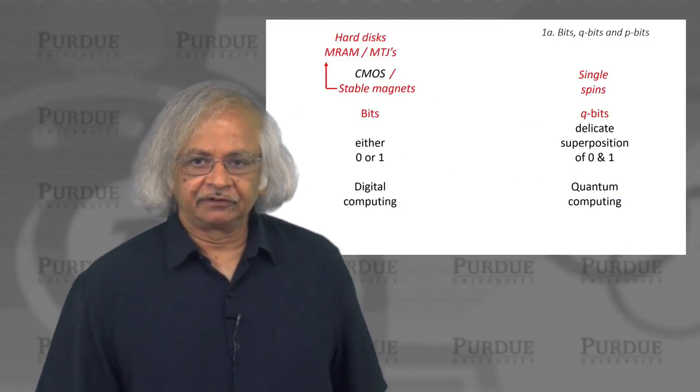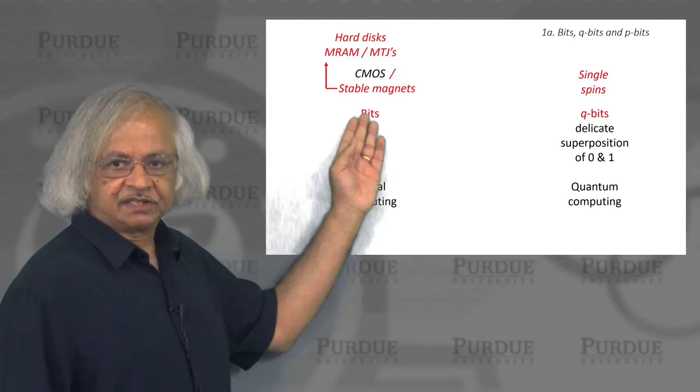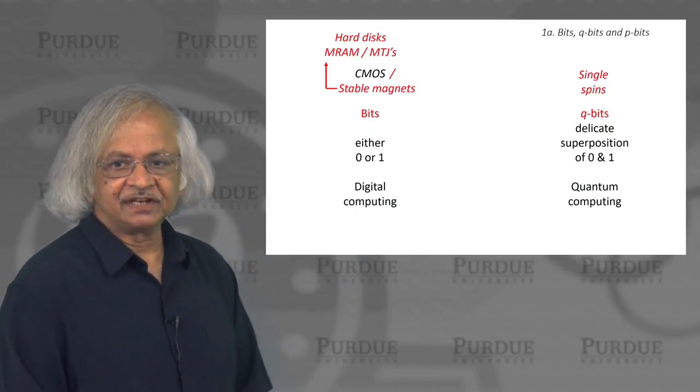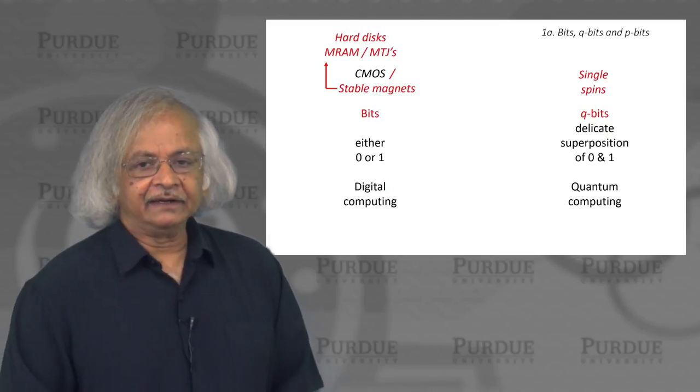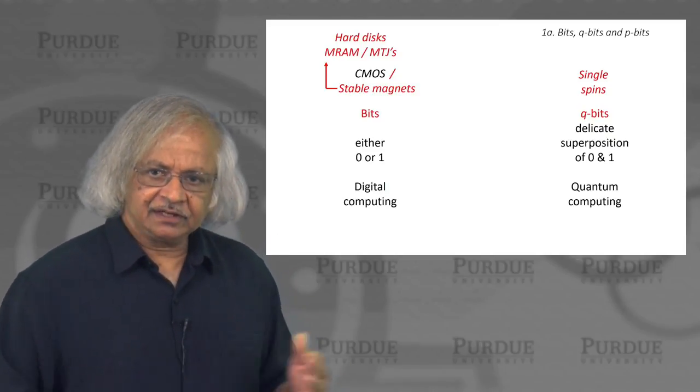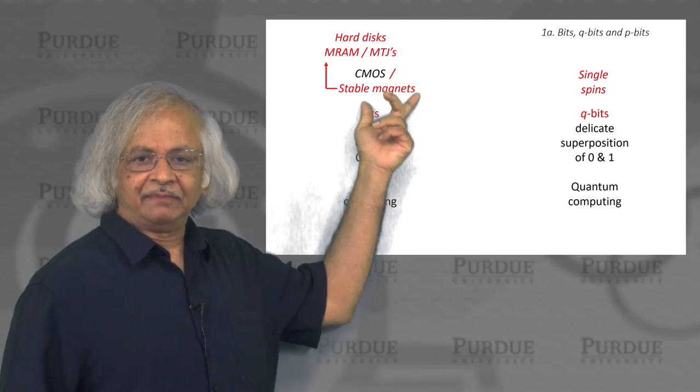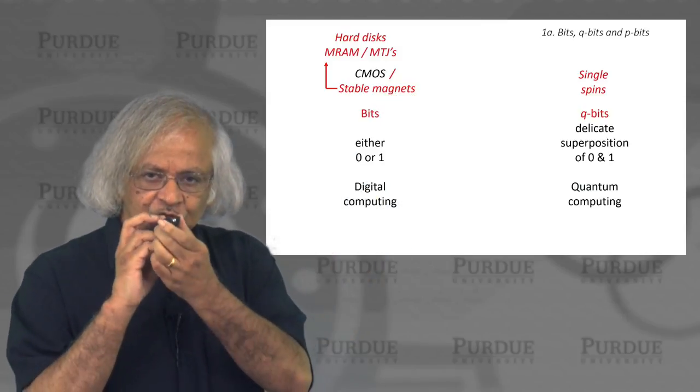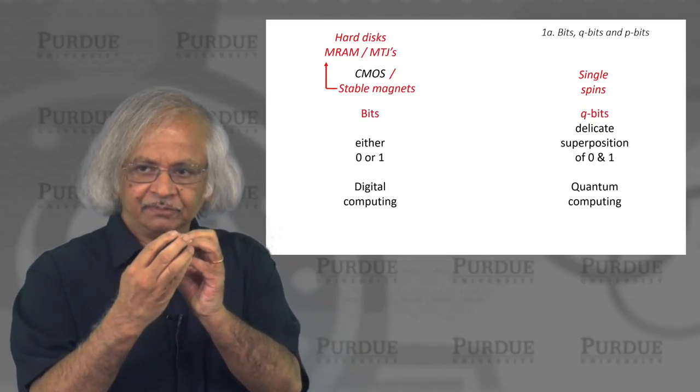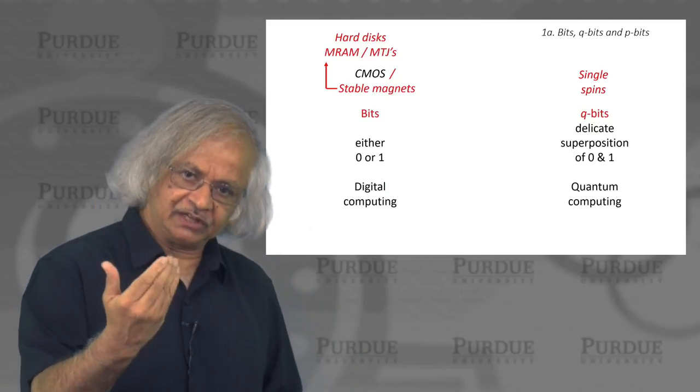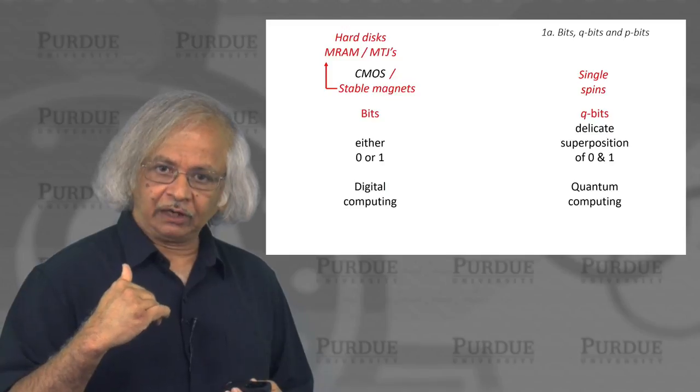In digital electronics we are all familiar with the concept of bits. We represent information as 0 and 1. One way of physically representing it is in terms of stable magnets, because magnets have two stable states - the easy axis and the one exactly opposite. One could represent 0 and the other could represent 1.